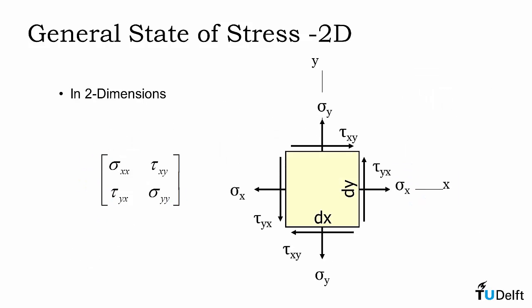The stress state in many engineering problems can actually be reduced down to two dimensions. In such cases, our 3x3 matrix reduces to a 2x2 matrix with two normal stress components and two shear stress components as shown here. We will often draw this pictorially as shown on the right with a square of width dx and height dy with the stress components acting on it as shown.